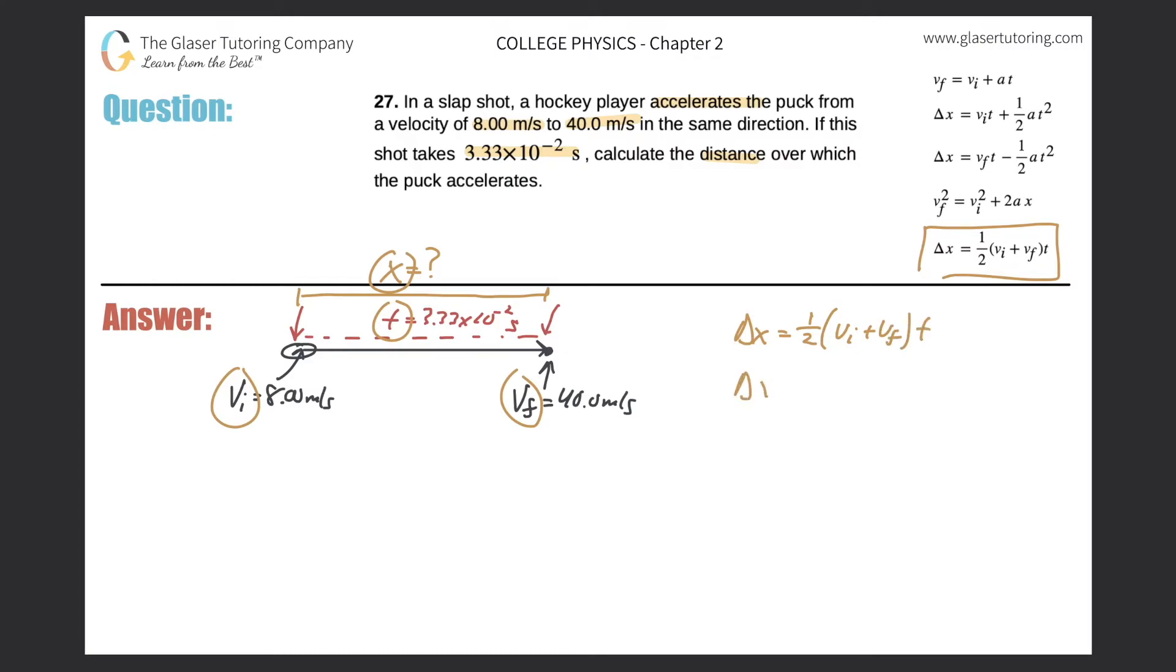So in order for me to find the displacement, I need to know the initial velocity, which it said was 8.00 meters per second. The final velocity then was 40.0. And then the time it took was 3.33 times 10 to the minus 2 seconds. I'm just leaving out the units, but I already know I have consistency. Meters and meters, so that's good. My displacement then will work out to be in meters, and the time values are all in seconds, so that works.